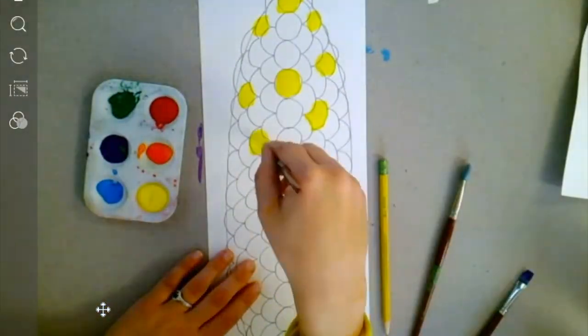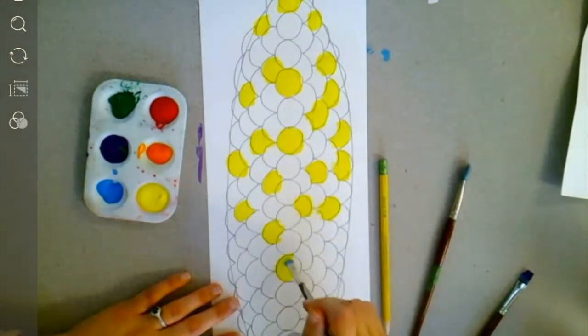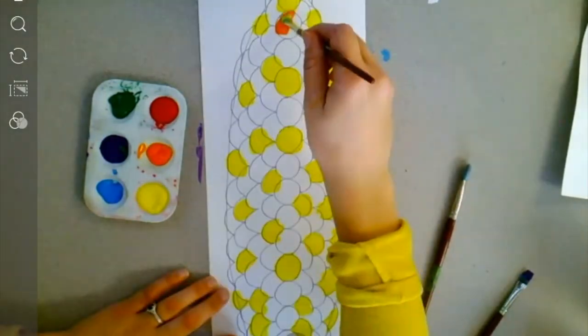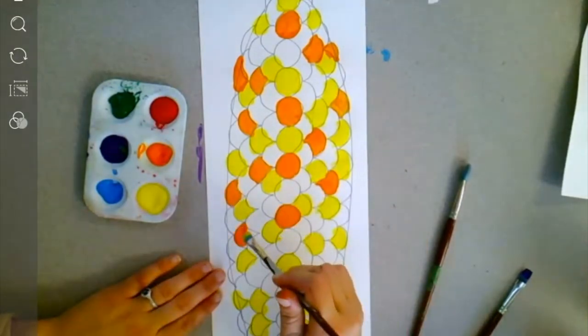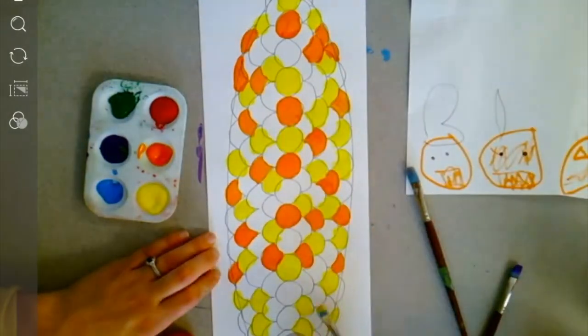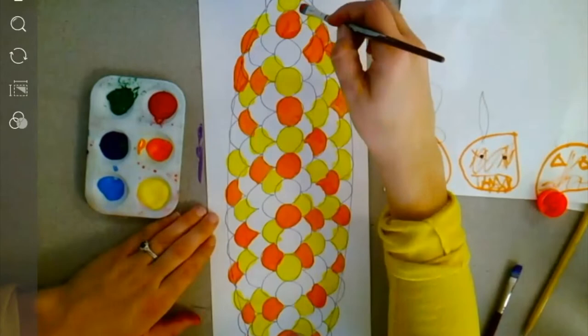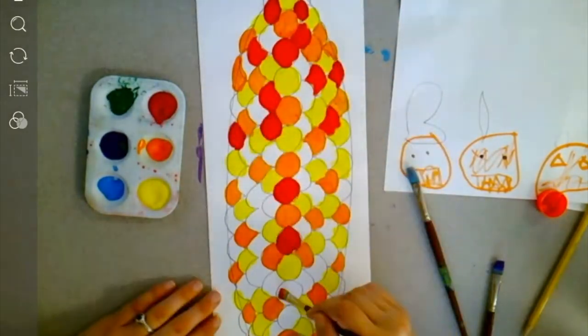Next you're going to use the warm colors to paint in the kernels of your corn. Spread them out sporadically. It's okay if you have two next to each other, but you don't want too many of the same color next to each other. Try to vary them up as much as you possibly can.